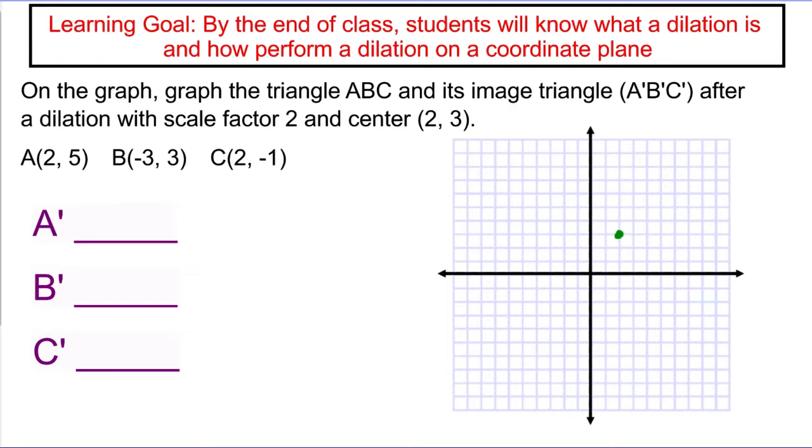So here's my center of dilation, 2, 3, and I'm going to graph my points. I have point A at (2, 5). And I have B at (-3, 3). And I have the point C at (2, -1). Let's put those together using a red line. I'm going to go A to B and B to C, and C back to A.